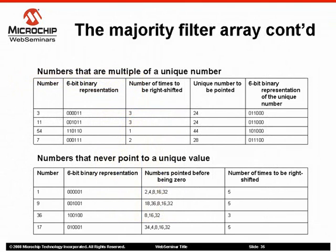The 48 remaining array numbers are pointed to the unique values in case a true-to-false condition occurs. There are some values that never point to any of the unique values because they are not multiples of any of the 16 unique numbers.